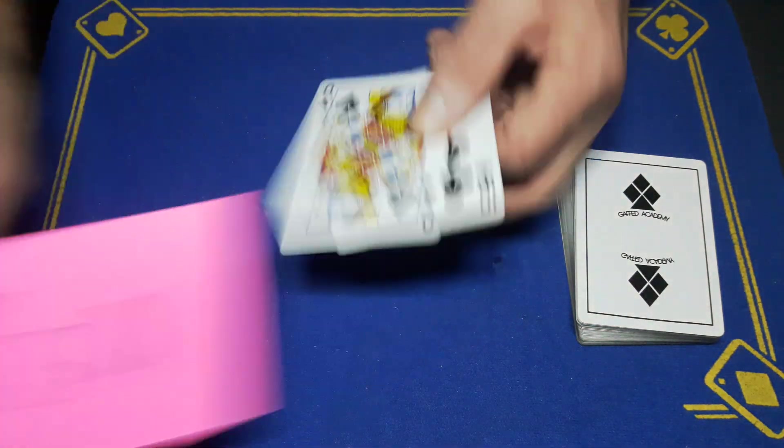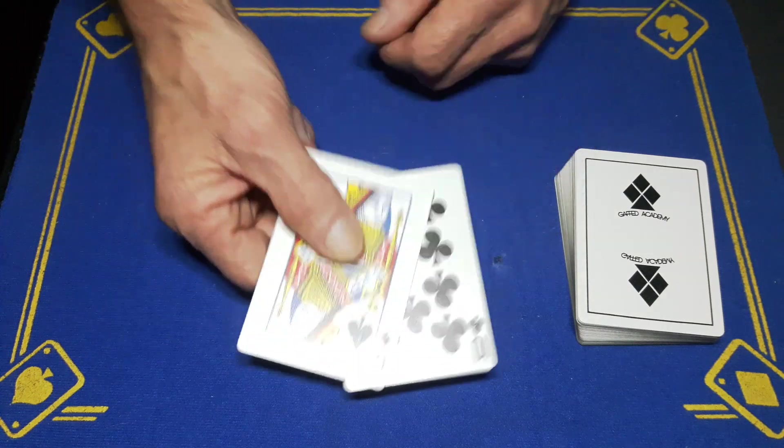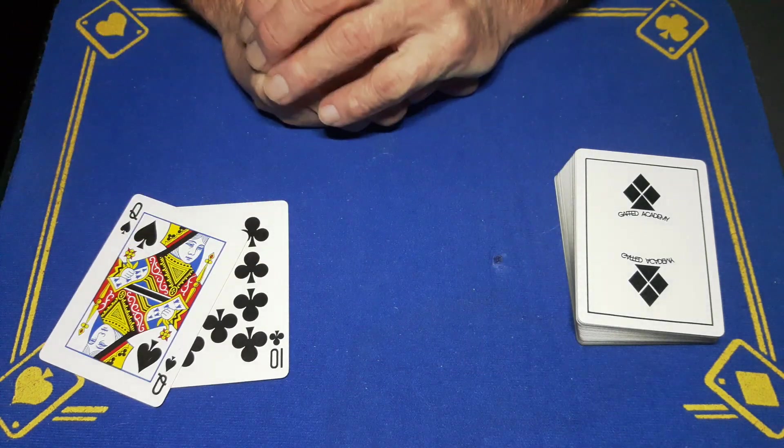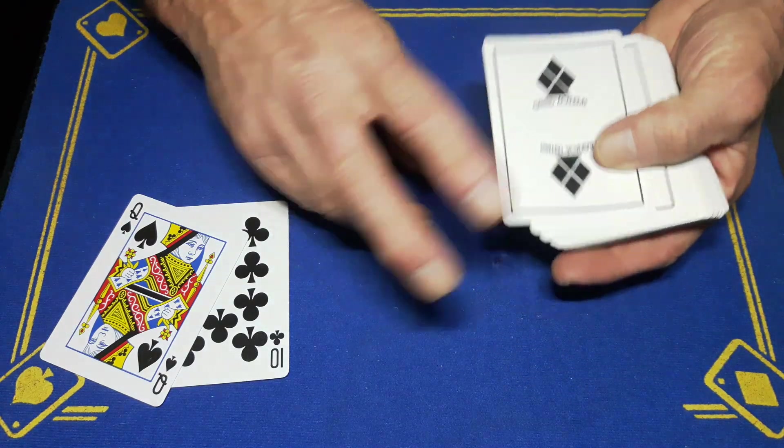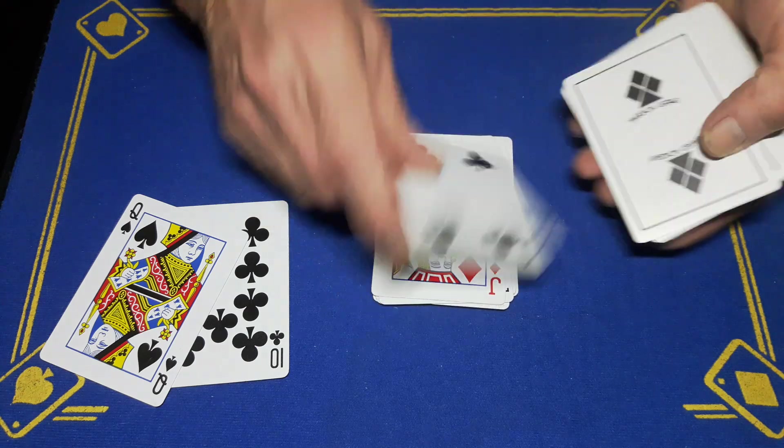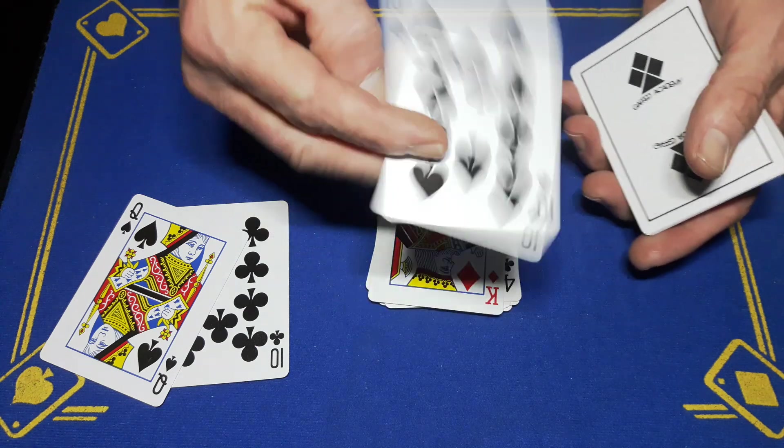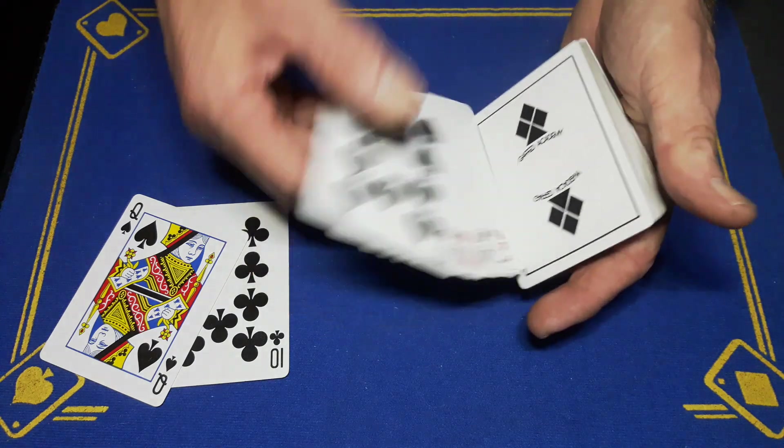But you're going to tell your spectator you've made a prediction, the ten of spades. And we got the ten of spades, so they'll be amazed at that. But what was that number you gave me, was it 13? And just deal to the 13th card: 1, 2, 3, 4, 5, 6, 7, 8, 9, 10, 11, 12, 13. The ten of spades.